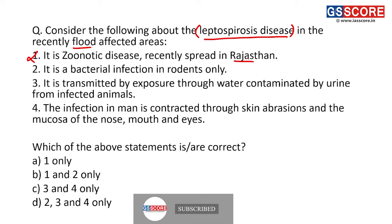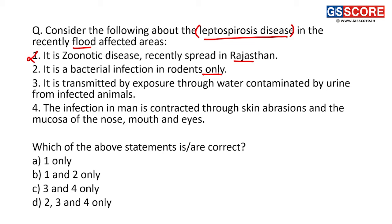Second statement: it is a bacterial infection in rodents only. This statement is partly correct, but the word 'only' makes it incorrect, because yes, it is a bacterial infection in rodents and also in other domesticated and wild animals. So it is not only seen in rodents, and that is why statement two is also an incorrect statement.